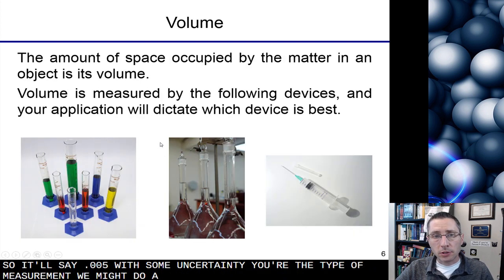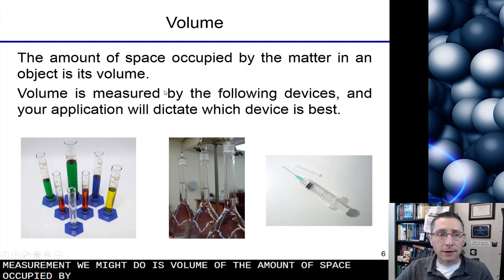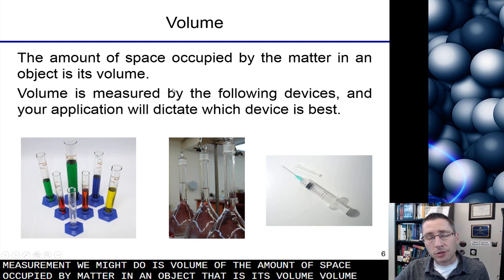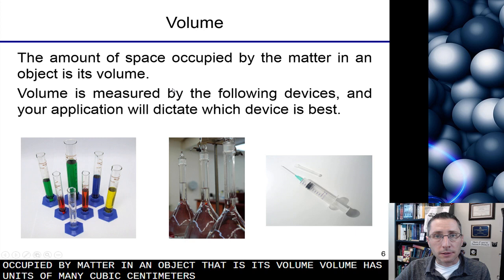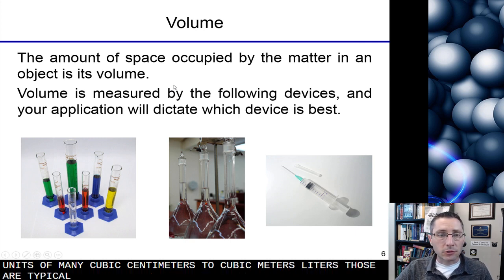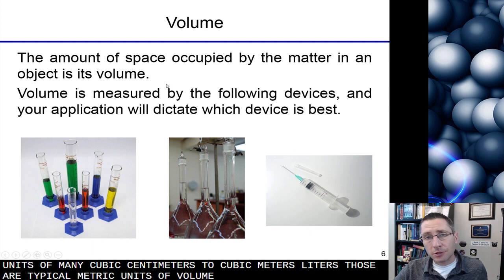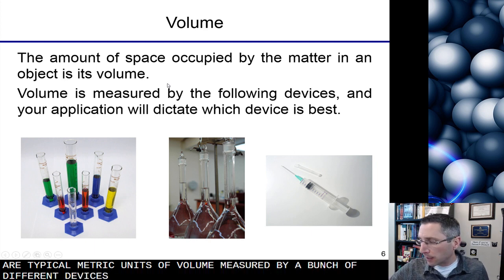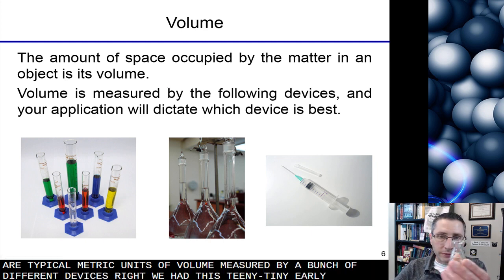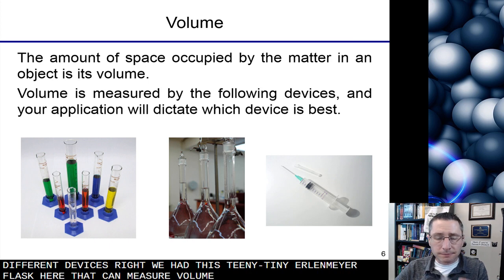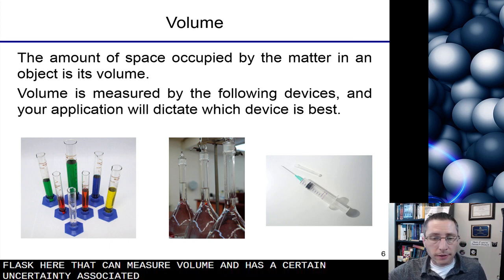Another type of measurement we might do is volume, the amount of space occupied by matter in an object. That is its volume. Volume has units of maybe cubic centimeters, cubic meters, liters. Those are typical metric units of volume. It can be measured by a bunch of different devices. We have this teeny tiny Erlenmeyer flask here that can measure volume. It has a certain uncertainty associated with it.